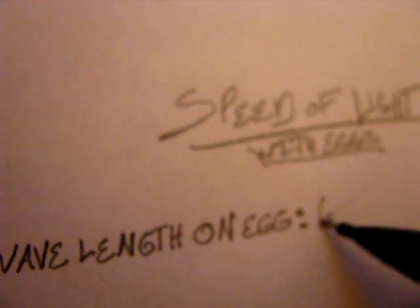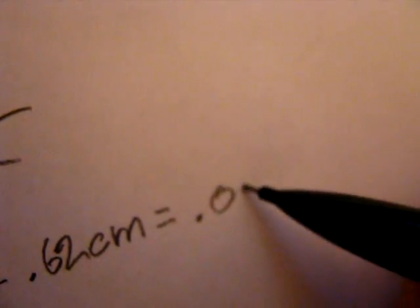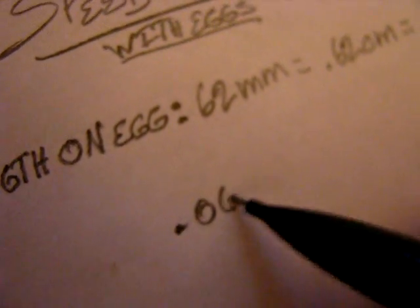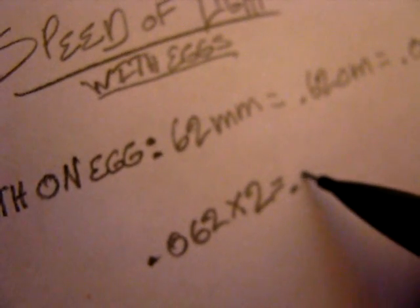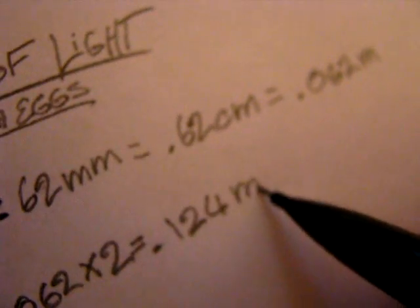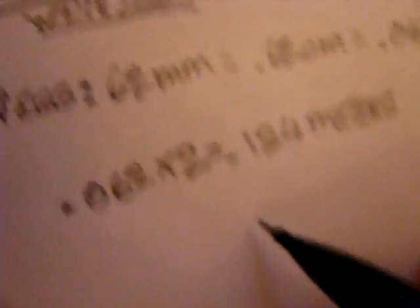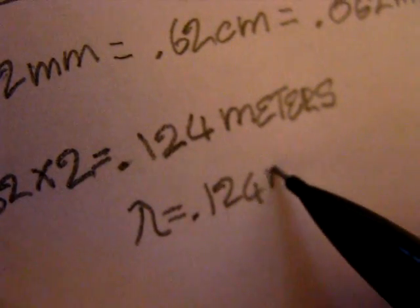Now, to find the wavelength, you take your measurement, which was 62 millimeters, and you need to convert this to meters. This will give you 0.062 meters. Then you multiply by 2 to find the wavelength, and the number you get is your wavelength. I get 0.124 meters.